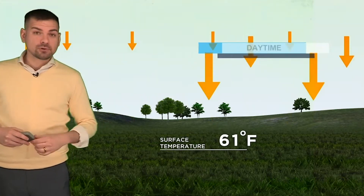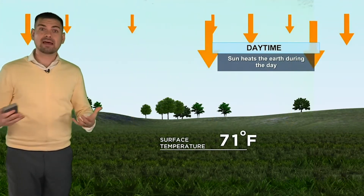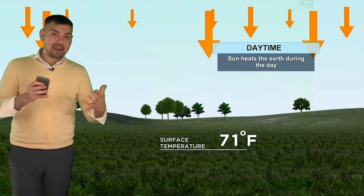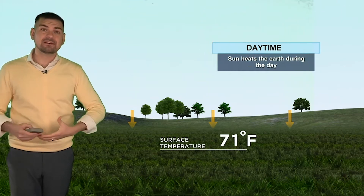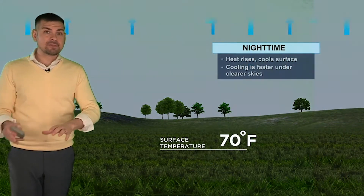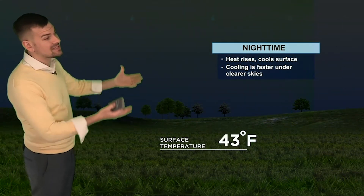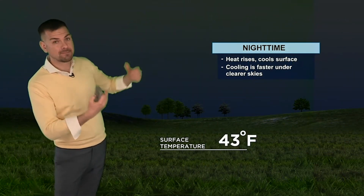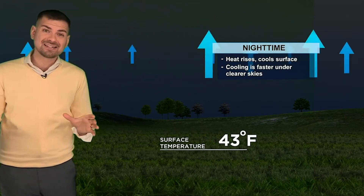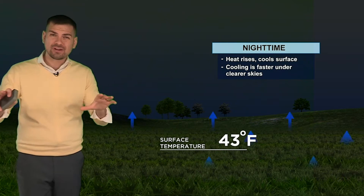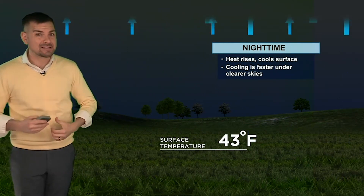During the daytime hours, solar radiation is going to beat down on the surface of the earth, allowing the ground to warm up rapidly. Every surface is going to warm at a different rate because they have different levels of heat retention. At night, the process reverses and any warmth that is built up escapes or radiates back up into the upper levels of the atmosphere. A clear, starry night will cool off the best. And as soon as you add in clouds, it acts as a blanket or insulation — you won't get as cold.